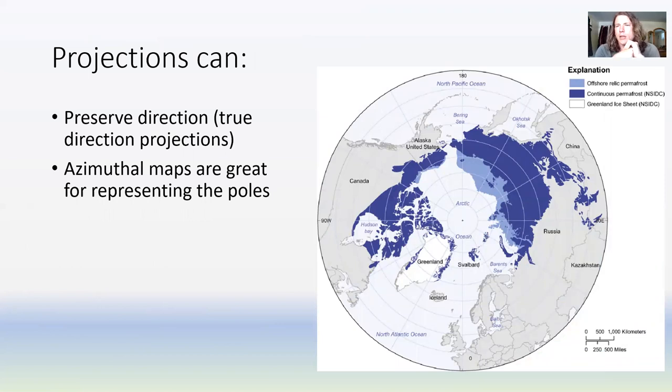Here's an example of an azimuthal projection. These projections can preserve direction and are great for representing the poles. They do have other uses, but they'll be out of the scope of this course. This projection is great because every point on the map is its true bearing from the North Pole.